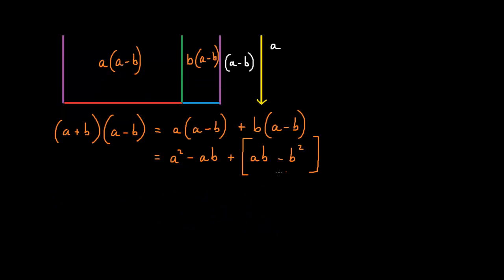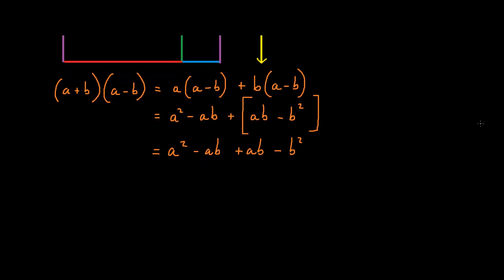Now that we've got this value, all we have to do is simplify it. So we get a squared minus ab plus ab minus b squared. And if we simplify this further, we get a squared minus b squared.